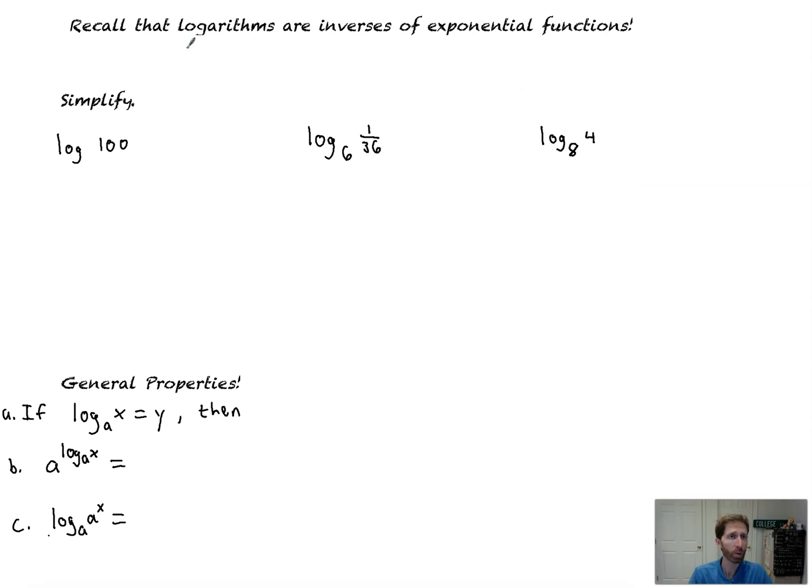Next, we should recall that logarithms are inverses of exponential functions, meaning a logarithm is like division is to multiplication, where multiplication is like your exponential function. So a logarithm to an exponential function is like division to multiplication. They undo each other. For instance, if we have log 100, that's really the same as log base 10 of 100. What we're really saying is 10 to the what is equal to 100, and that'd be 10 to the 2. So log base 10 of 100 is 2, because 10 to the 2 is 100.